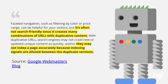This is Google's explanation of what faceted navigation is and what you need to be aware of if you're using it on your website. Faceted navigation — such as filtering by color or price range — can be helpful for visitors, but it's often not search-friendly since it creates many combinations of URLs with duplicate content. They may not index the page accurately because indexing signals are diluted between the duplicate versions.